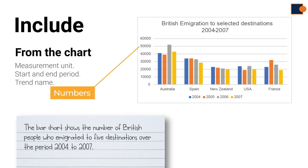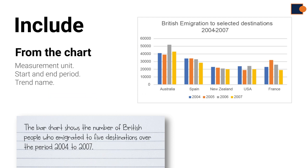In our case, the measurement is included — it is in numbers. Sometimes this can be a percentage. The number of destinations is also mentioned in the introduction. Once you have added all necessary information to introduce what the chart is about, you can move to the next paragraph.